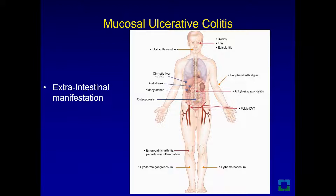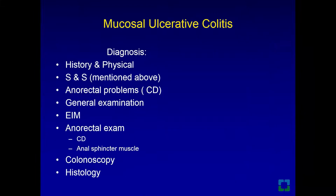Extra-intestinal manifestations apply to both ulcerative colitis and Crohn's disease. Diagnosis starts with a good history and thorough physical exam, investigating signs and symptoms. Ask about anorectal problems to rule out Crohn's disease. General examination including extra-intestinal manifestations and an anorectal exam is needed to look for signs of Crohn's disease and assess the anal sphincter.